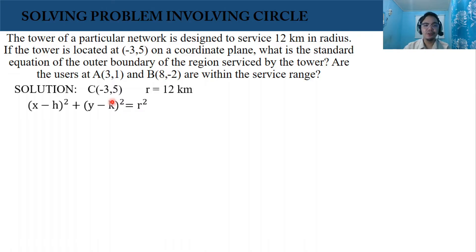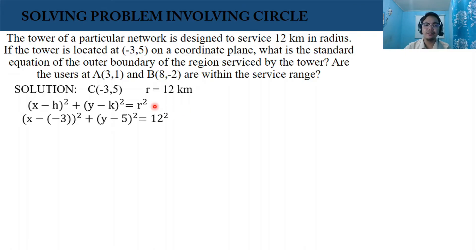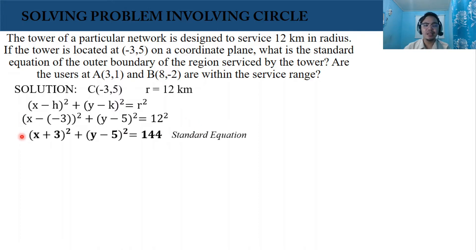We're going to use this standard form or standard equation for a circle: quantity x minus h squared plus quantity y minus k squared equals r squared. We're going to substitute the values of h, k, and the radius. We have quantity x minus negative 3 squared plus quantity y minus 5 squared equals 12 squared.